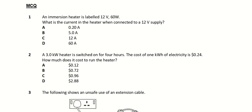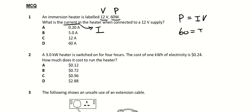This video is for your practical electricity tutorial. The immersion heater is labelled 12 volts and 60 watts. So when I see all these numbers, I must give them an identity. So 12 volts will be V and 60 will be P. What is the current in the heater when connected to a 12 volt supply? Use P equals IV. 60 equals I times 12, so I equals 5. Answer is B.